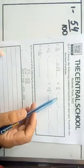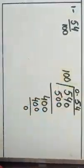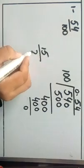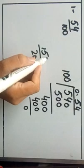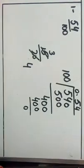Next, part 2 is 15 over 20. Both 15 and 20 have the common factor 5. So 5 threes are 15, and 5 fours are 20. Therefore, 15 over 20 can be written as 3 over 4.